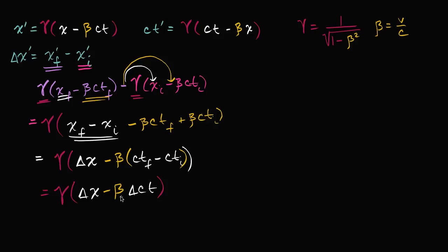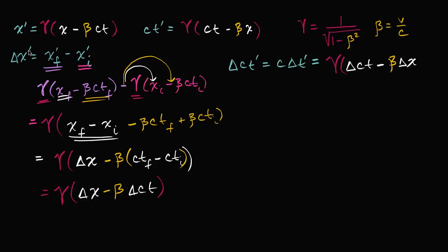I'm not going to do it in this video, but you can make the exact same algebraic argument for your change in ct prime. I encourage you to do this on your own: change in ct prime — which you could also write as c times delta t prime — is going to be equal to gamma times change in ct, minus beta times change in x. Just say delta ct prime equals ct prime final minus ct prime initial, substitute, do a little algebraic manipulation, and you'll get that result.